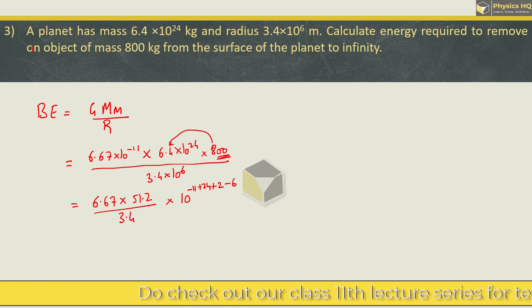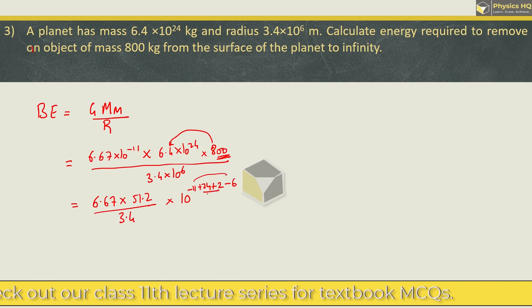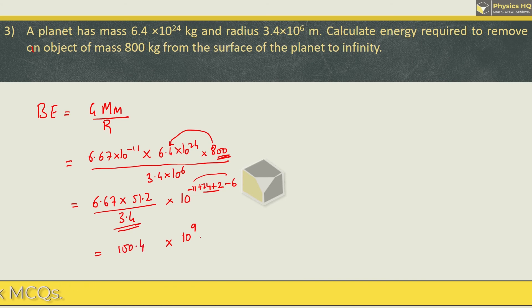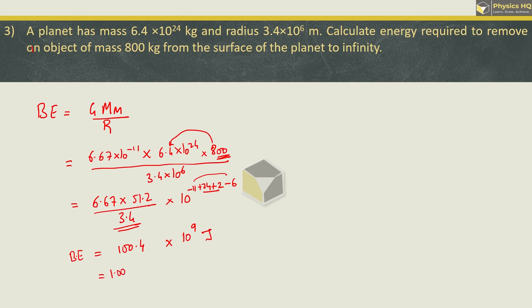For powers of 10: 10⁻¹¹⁺²⁴⁺²⁻⁶, which gives 10⁹. When you solve this part using logarithms, you get 100.4, so the binding energy is 1.004 × 10¹¹ joules.